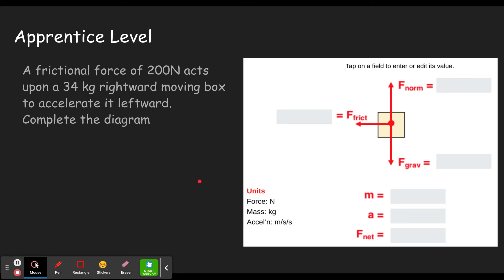This will give you a good chance to show that you understand it. So this problem says: a frictional force of 200 newtons acts upon a 34 kilogram rightward moving box to accelerate it leftwards — in other words, slow it down. Something moving rightward and accelerating leftward is slowing down. Also, friction can only cause things to slow down, at least relative to the surface it's in contact with.